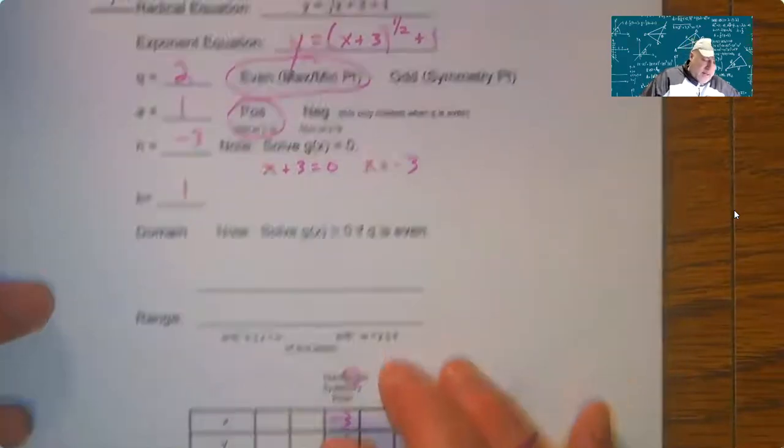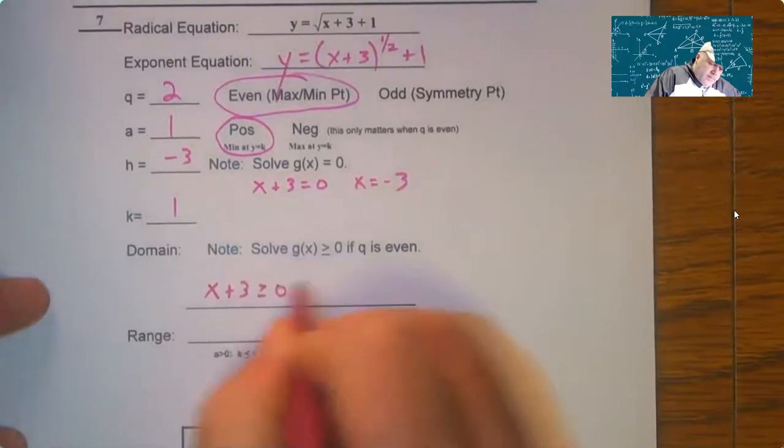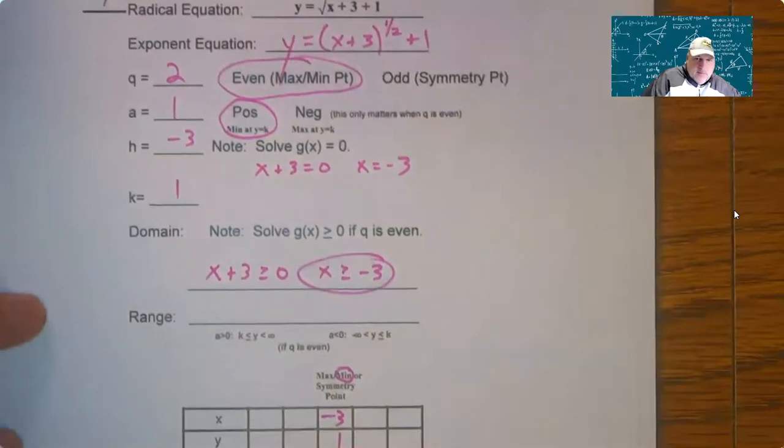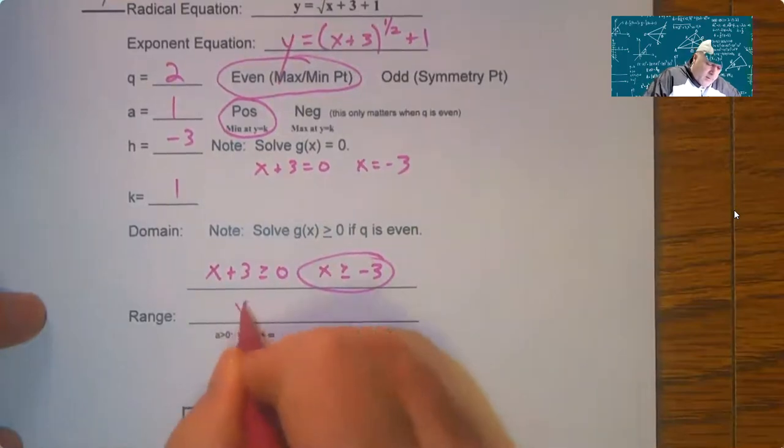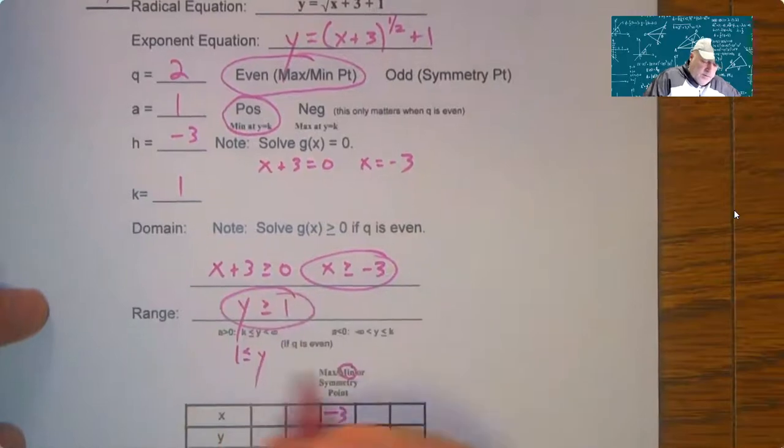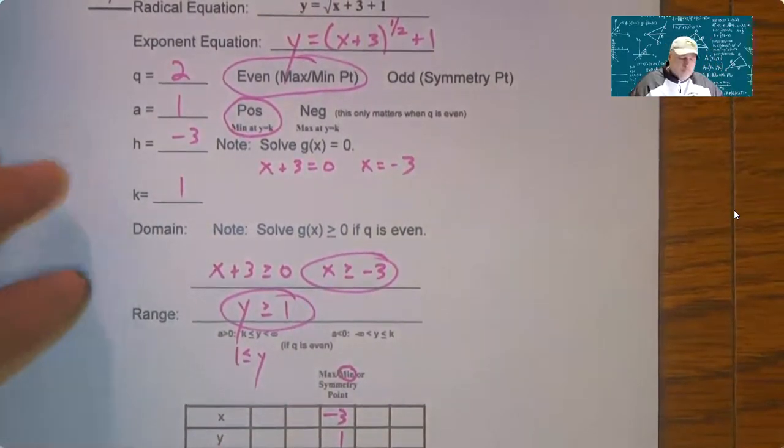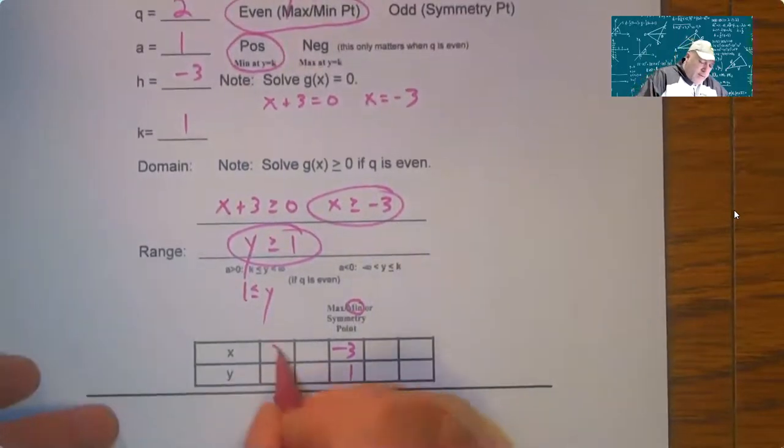So now all of this stuff matters. We have to take x plus three greater than or equal to zero. So x is greater than or equal to negative three is the domain. And then the range, A is greater than zero, so it's going to be one less than or equal to Y, or Y is greater than or equal to one.